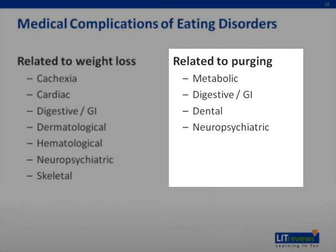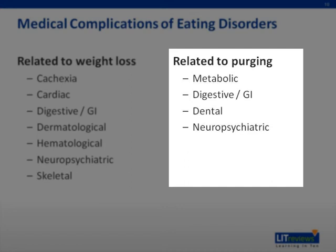Medical complications related to purging include electrolyte abnormalities such as low potassium and low chloride, which can result in hypokalemic, hypochloremic metabolic alkalosis. Repeated purging can cause GI complications such as salivary gland enlargement and pancreatic inflammation, raised serum amylase, and esophageal and gastric erosions and bleeds.